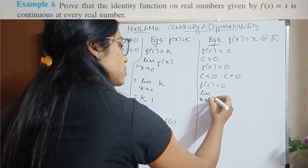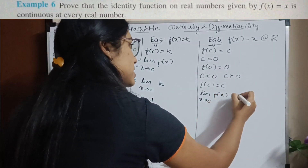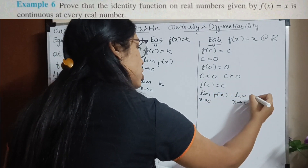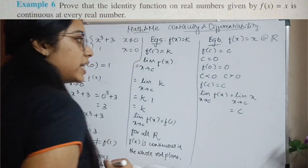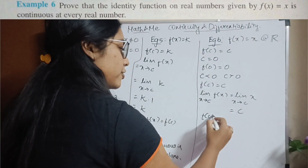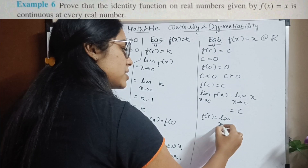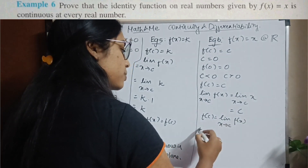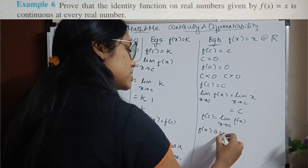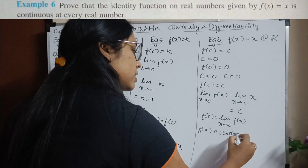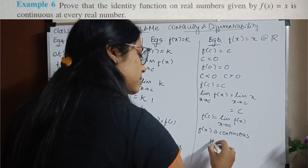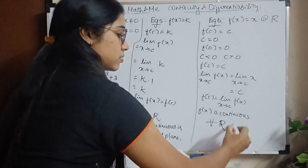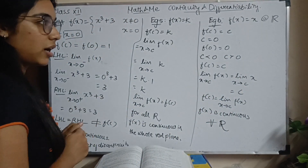Now, limit as x tends to c of f(x) = limit as x tends to c of x = c. So f(c) = limit as x tends to c of f(x), which means f(x) is continuous for all real numbers ℝ.